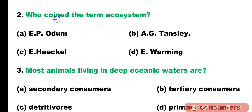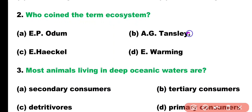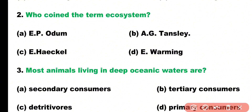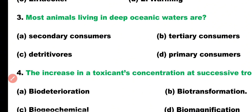Question number two. Who coined the term ecosystem for the first time? Options: E.P. Odom, A.G. Tensley, Ernest Haeckel, or E. Warming? Correct answer is option B. A.G. Tensley coined the term ecosystem for the first time.